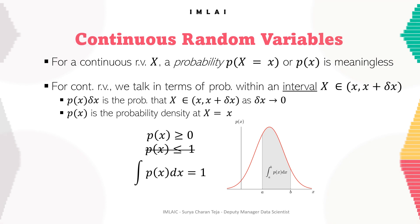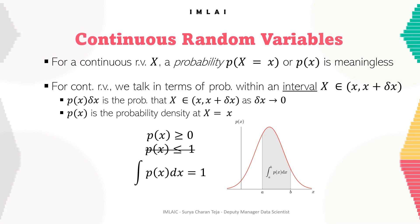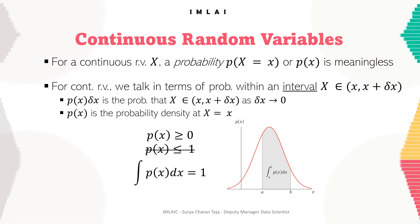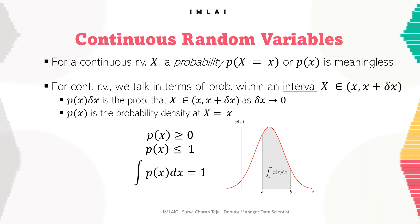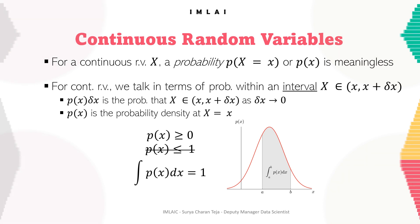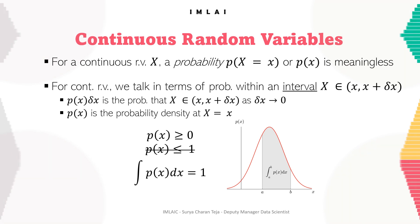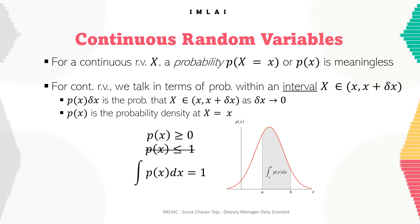A third example of a continuous random variable is the time it takes to complete a task. This variable can take on any value between the minimum and maximum times it could take, the probability of any particular value is zero, and the probability of a range of values is determined by the PDF. Continuous random variables are widely used in statistical analysis and modeling in finance, engineering, and the social sciences. Common probability distributions for continuous random variables include the normal distribution, uniform distribution, and exponential distribution.